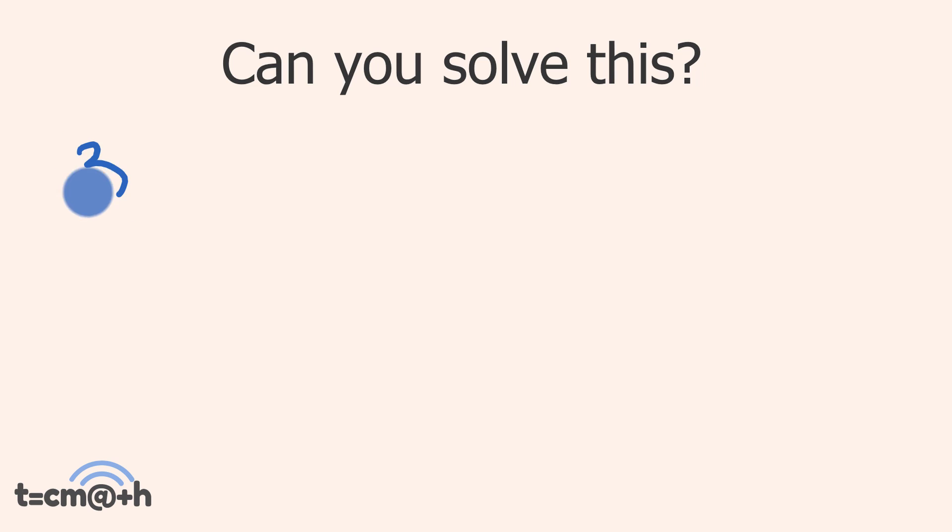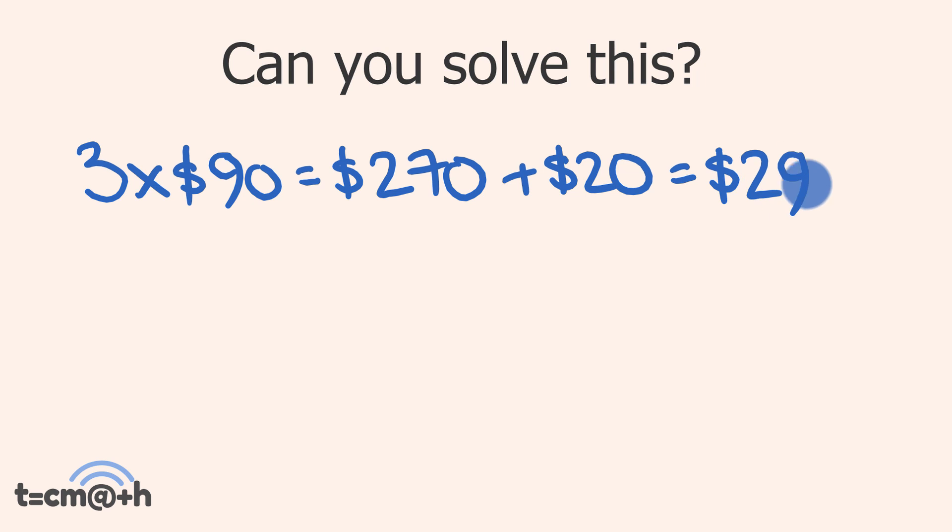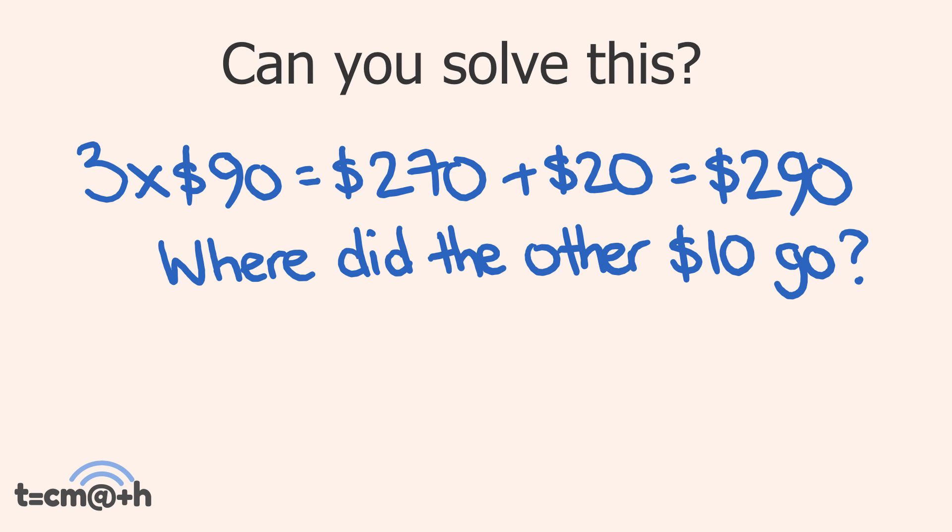So here's our problem. Each of the three men paid $90. That's $100 take away the $10 that got returned. And 3 times 90 is equal to $270. Plus there's $20 that the clerk kept. $270 plus $20 is equal to $290. They paid $300 originally. Where did the other $10 go?